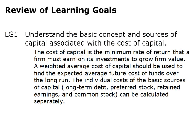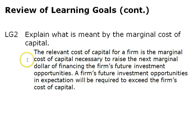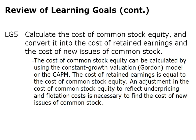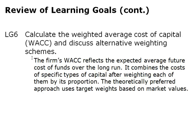That covers the weighted average cost of capital chapter. To review our learning goals: we understand the basic sources of capital and the cost of capital; we can explain the marginal cost of capital as the next new dollar of funds raised; we determined the long-term cost of debt and why the after-tax cost is relevant; we examined the cost of preferred stock, the cost of equity using retained earnings and new stock, and how to calculate the weighted average cost of capital. That's it for chapter 9—cost of capital. Thank you.